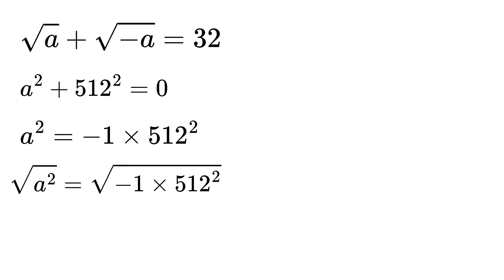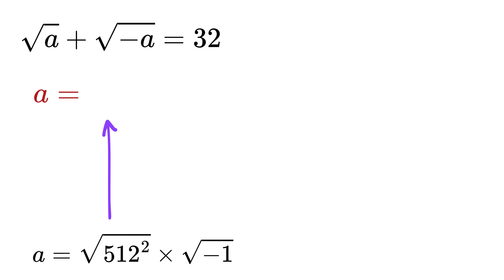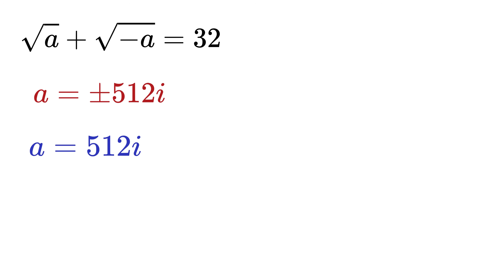Now take the square root on both sides. This will become a, and the right side will be the square root of 512 squared times the square root of minus 1. Thus a will be equal to plus or minus 512 times i, where i is also called iota, or the imaginary unit. So a is either 512i or minus 512i.